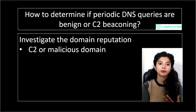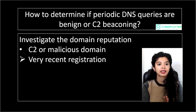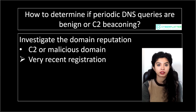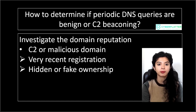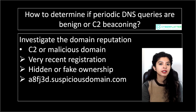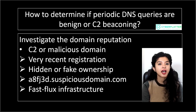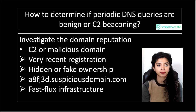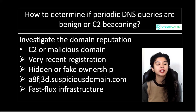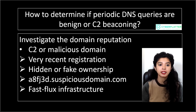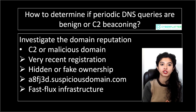For C2 or malicious domains, you usually see the opposite: very recent registration, since attackers spin up new domains constantly; hidden or fake ownership such as masked WHOIS data or privacy protection services; strange, random-looking names that are often auto-generated; and fast flux infrastructure where the domain rapidly switches IP addresses to avoid detection. When you combine this information with the timing pattern of the DNS traffic, it becomes much easier to tell whether you are dealing with normal activity or potential malware beaconing.